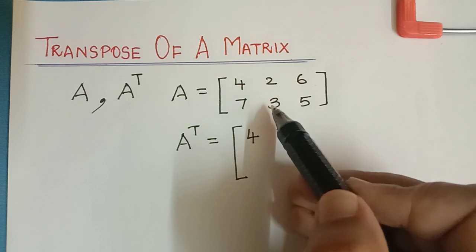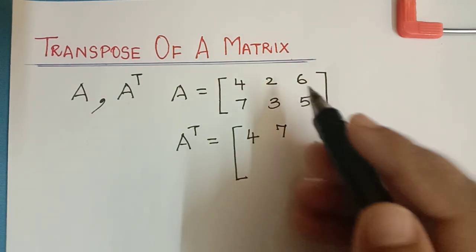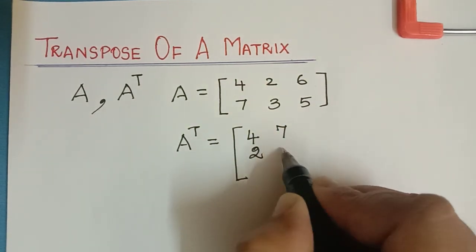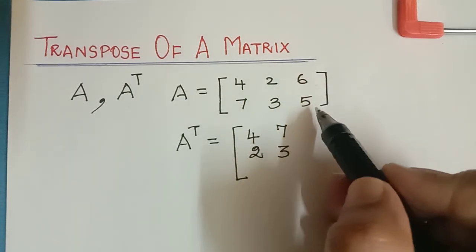And the next column is 2, 3, so this column turns as a second row. The third column is 6, 5.